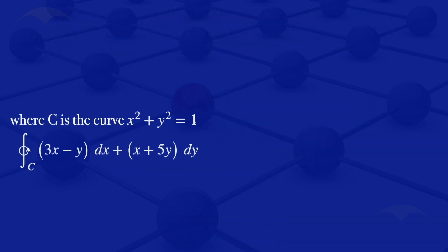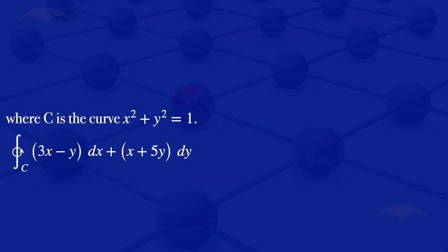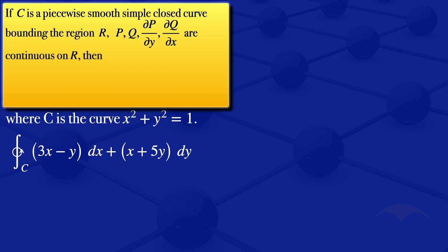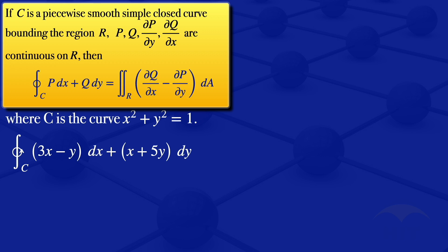We have that line integral and that curve C. I will start by looking at the following information. If C is a piecewise smooth simple closed curve bounding the region R, and P, Q, the partial derivative of P with respect to y, and the partial derivative of Q with respect to x are continuous on the region R, then the integral along the closed curve C in the positive direction of P dx plus Q dy equals the double integral over the region R of the partial derivative of Q with respect to x minus the partial derivative of P with respect to y dA.